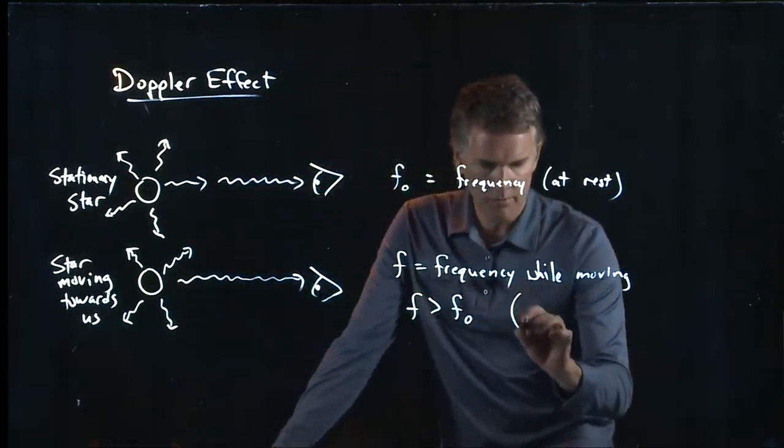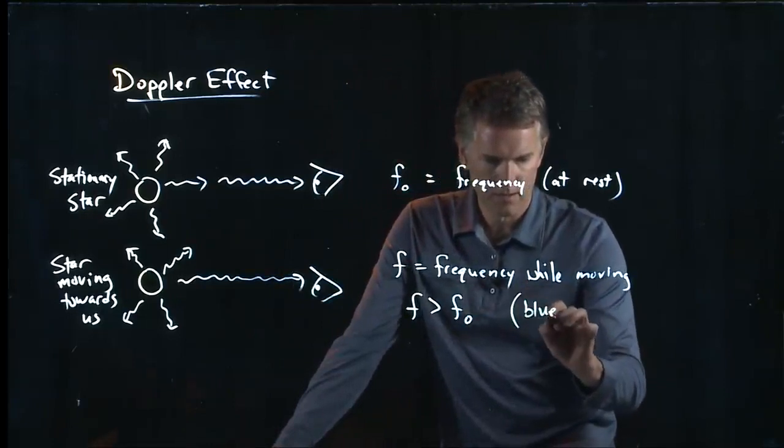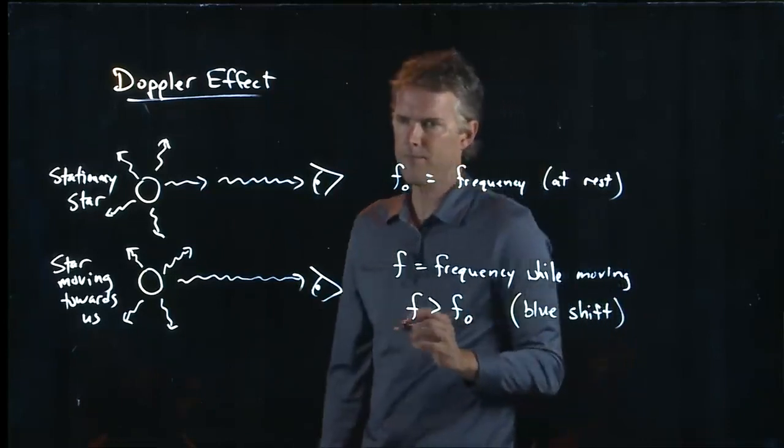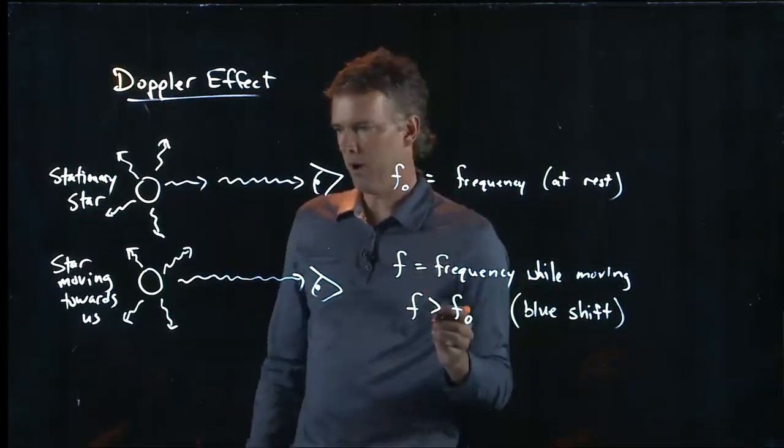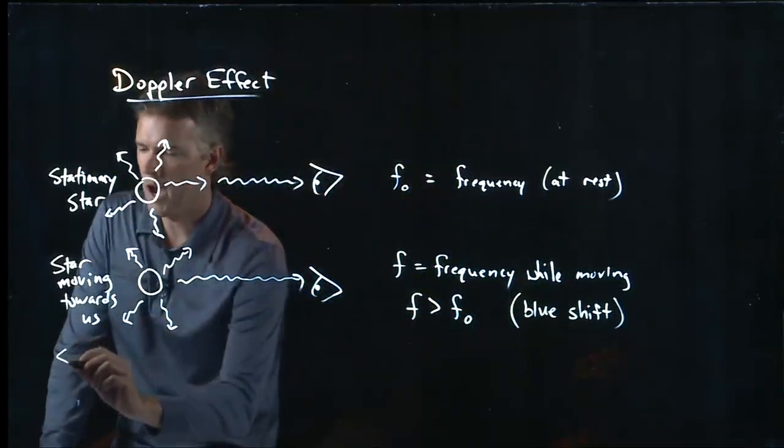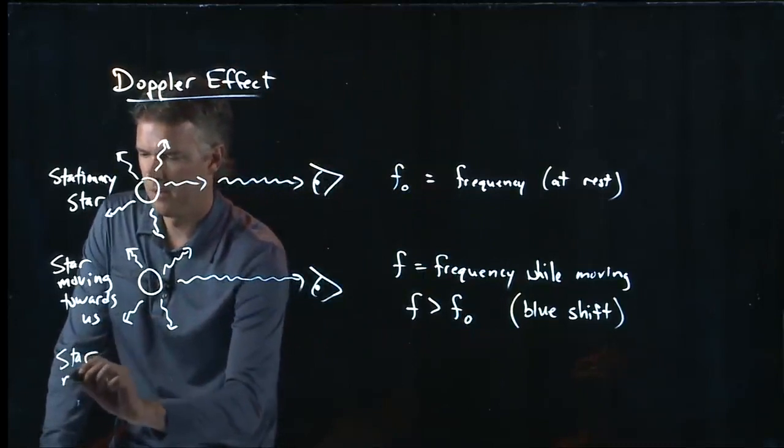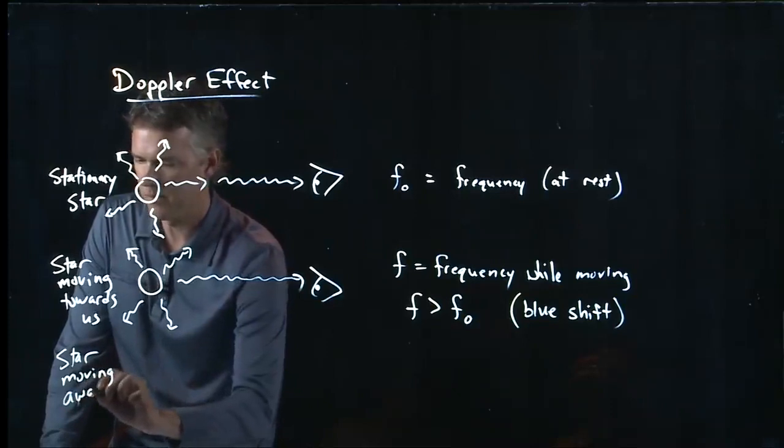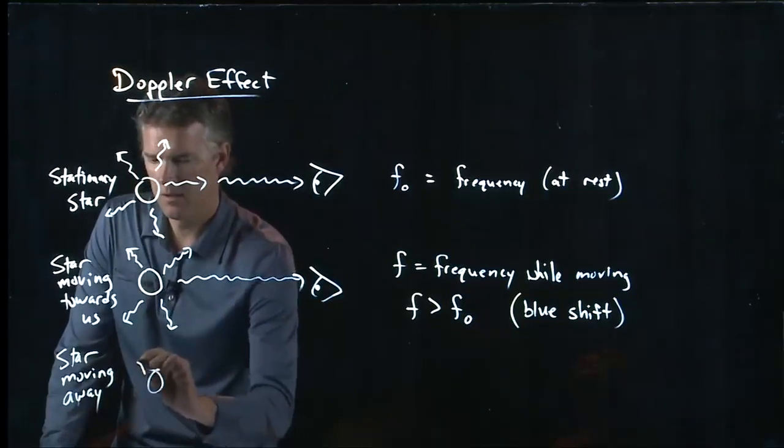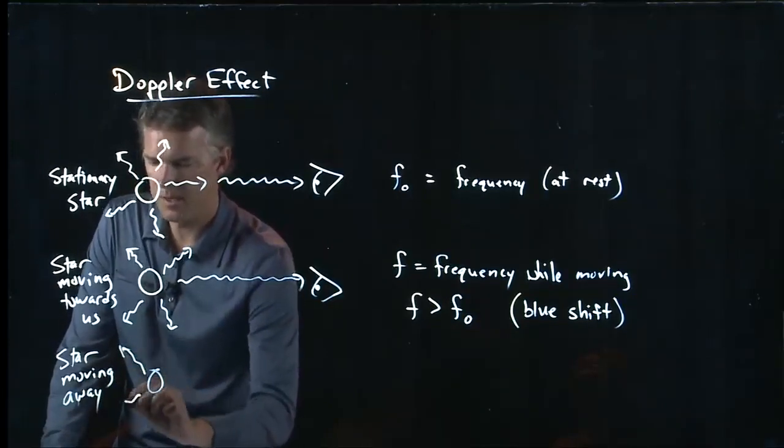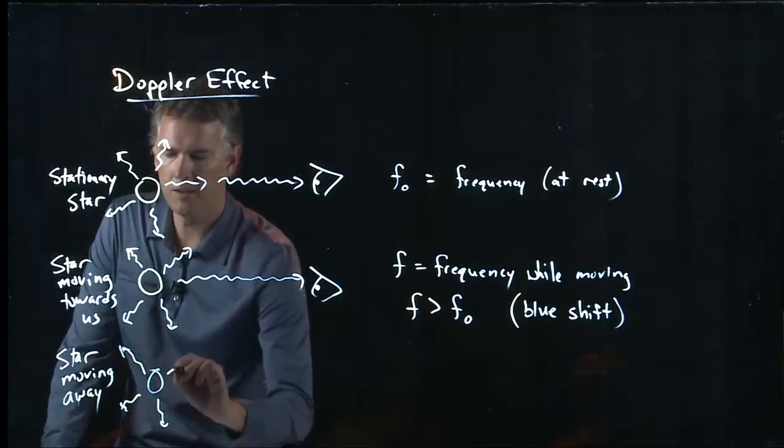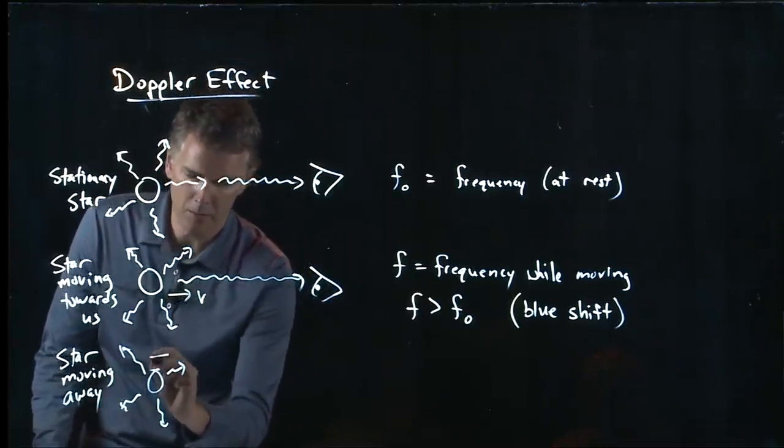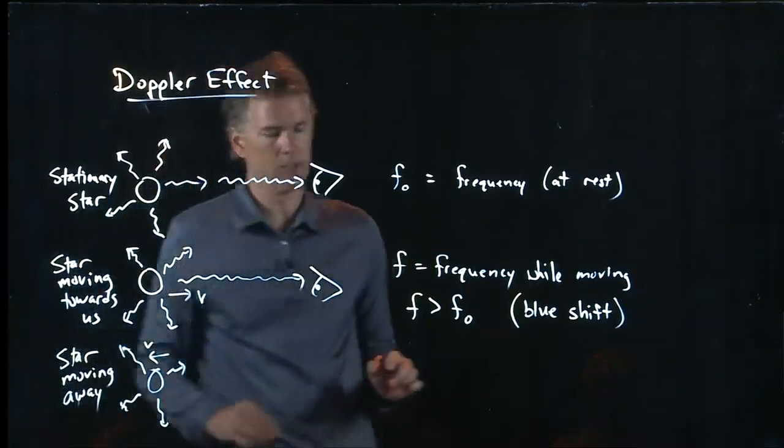And this is something that you've heard of. It's called the blue shift. You've probably heard of the opposite, which is when the star is moving away from us. Okay, so now we're going to take that star and it's going to move away from us. In this one it was moving towards us with a speed V and now it's going to move away from us with a speed V.